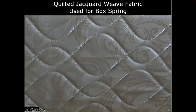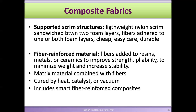There are other composite structures like supported scrim structures and fiber-reinforced materials. These materials use fibers but also add resins, combining everything together. One example would be skateboards — they use some textile material inside along with resin to create a sturdy surface. These are materials that use fibers for reinforcement.